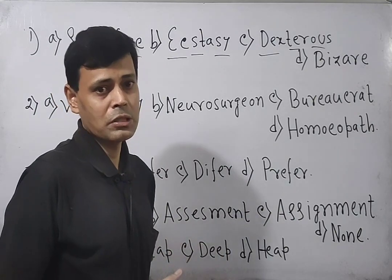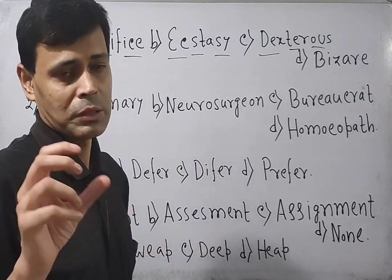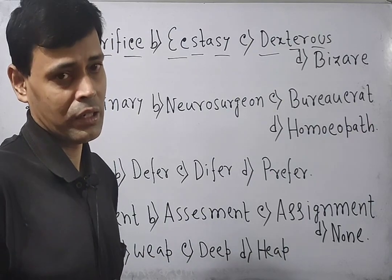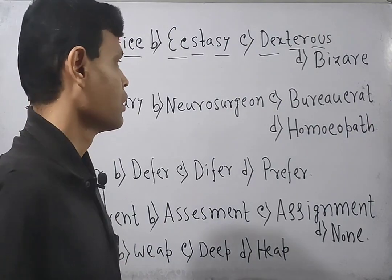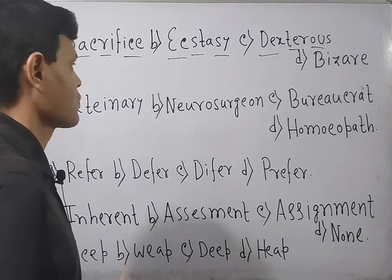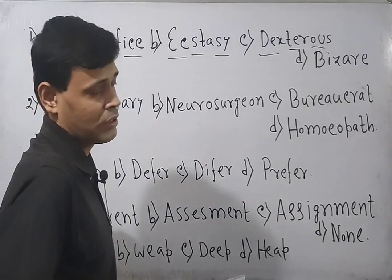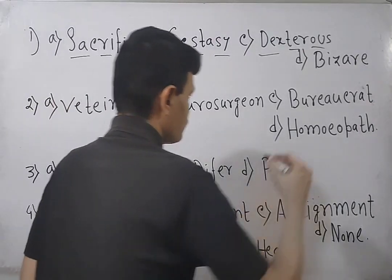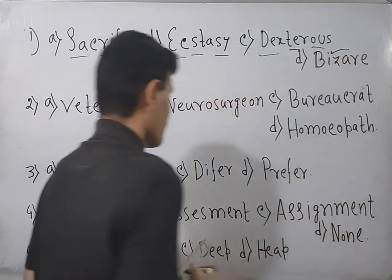The incorrectly spelled word is Bizarre. The spelling is B-I-Z-A-R-R-E, not single R. No mistake in Sacrifice or Ecstasy or Dexterous. Rather, mistake lies in Bizarre. So this is the answer. Now go next.